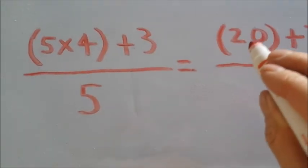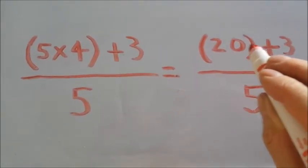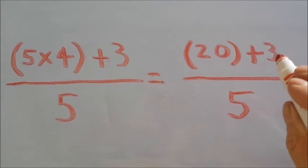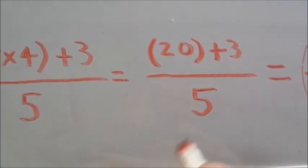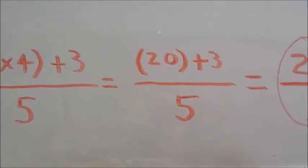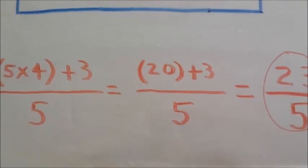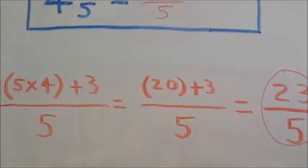5 times 4 becomes 20. We add our 3. 20 plus 3 becomes 23 over 5 for a final answer of 23 fifths.